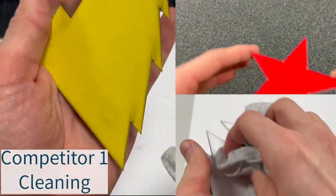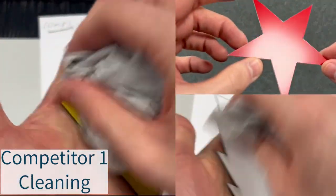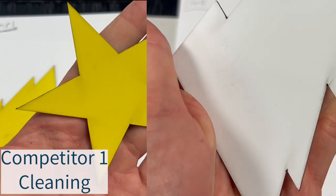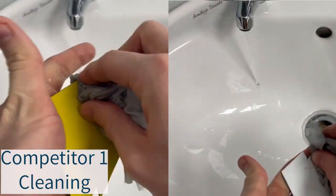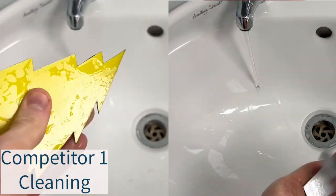You'll notice that even after cleaning competitor one with a dry cloth and wet wipe lots of residue and debris still remains on the material. Using water also proves to be an inefficient way to clean the material with residue and notches still visible.